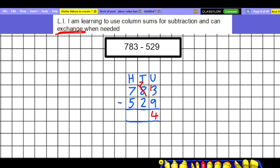Now we have to remember that this is no longer an 8. It is now a 7. So our sum now is 7 take away 2. 7 take away 2 is 5. And lastly, we move on to our 100s column. And it's 7 take away 5, which is 2.